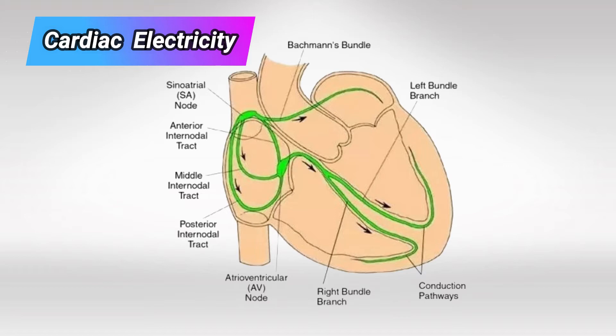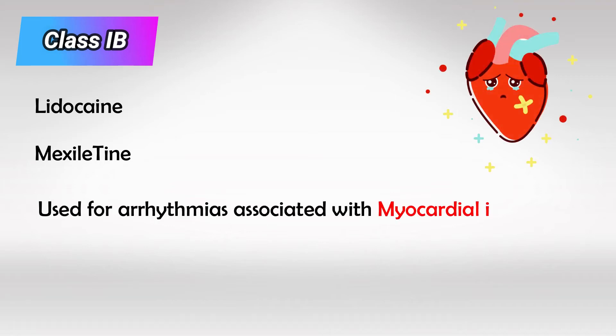In the case of myocardial infarction, the dead cells block the travel of electricity from top to bottom, as dead cells do not allow the passage of electricity. This forces the heart to take alternative pathways, which causes arrhythmia. Class 1b solves this problem by allowing electricity to flow through dead or semi-dead cells.